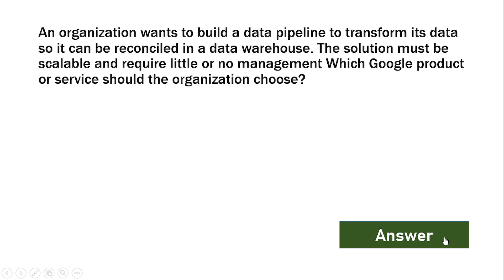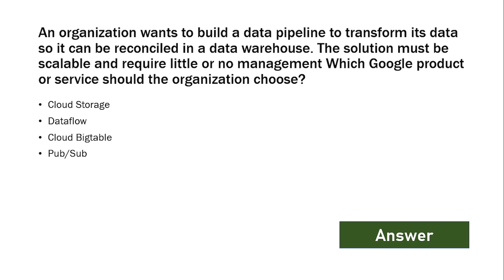An organization wants to build a data pipeline to transfer its data so it can be cleaned in a data warehouse. The solution must be scalable and require little or no management. Which Google product or service should the organization choose? The options are: Cloud Storage, Dataflow, Cloud Bigtable, Pub/Sub. The answer is: Dataflow.